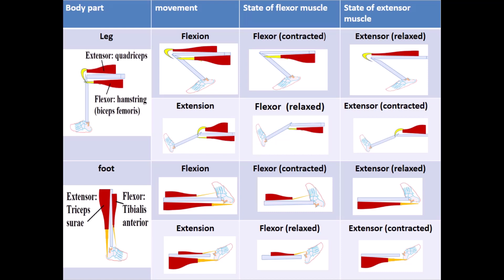Here is the summary of the movements in the leg and foot. In the leg, the extensor is the quadriceps and the flexor is the hamstring or biceps femoris. During flexion, the flexor is contracted and the extensor is relaxed; during extension, the flexor is relaxed and the extensor is contracted. The same for the foot: the extensor is the triceps sura in the back, the flexor is the tibialis anterior in the front. During flexion, the flexor contracts and the extensor relaxes; during extension, the flexor is relaxed and the extensor is contracted.